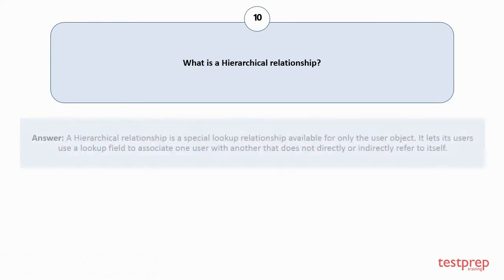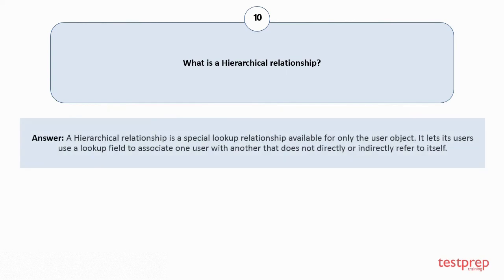Question number ten: What is a hierarchical relationship? A hierarchical relationship is a special lookup relationship available only for the user object. It lets users use a lookup field to associate one user with another that does not directly or indirectly refer to itself.